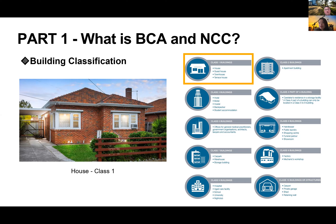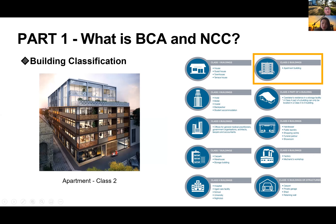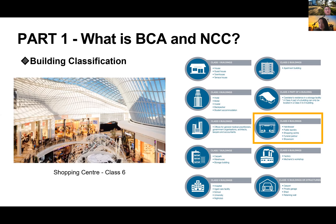Class five is office. Class six is very commonly used for shops, restaurants, shopping centres — anything dealing with retail or hospitality. Class seven is car park and warehouse. Class eight is factory. Class nine is an interesting class: hospital, school, nightclub, gym. It has three sub-classes: 9A, 9B, and 9C.